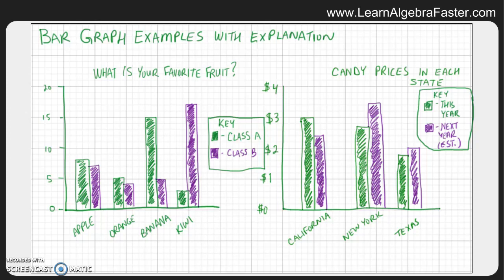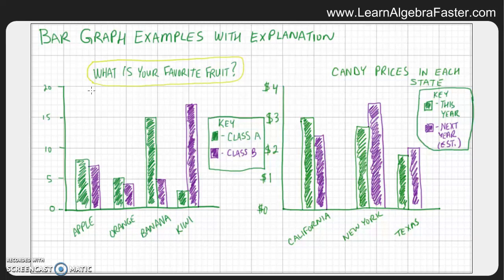On the left side we start at the top, and the most important part of any bar graph is the title — that's pretty simple because it explains what the graph is talking about. In this case it's asking, what is your favorite fruit? That lets you know what to expect on the graph, so we're going to expect different types of fruit and a count of people who say that is their favorite.